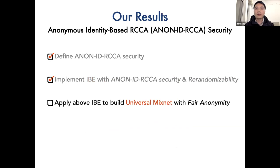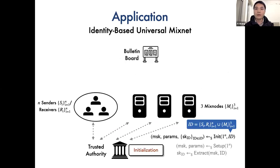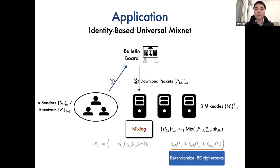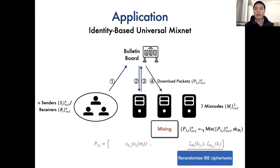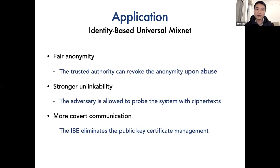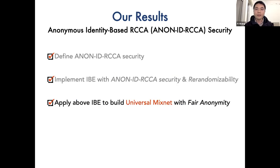Finally, we apply the above IBE to build a universal mixnet with fair anonymity. A trusted authority plays the role of key generation center and generates secret keys for users and mix nodes. The sender generates a packet by encrypting a message with symmetric encryption and our IBE scheme and uploads the packet to the bulletin board. The mix node takes turns to decrypt the symmetric-key ciphertext and randomize the IBE ciphertext in the package. Finally the receiver can decrypt the package and retrieve the message. Compared with previous universal mixnet constructions, our identity-based universal mixnet achieves fair anonymity and enjoys stronger unlinkability and provides more covert communication for the sender.